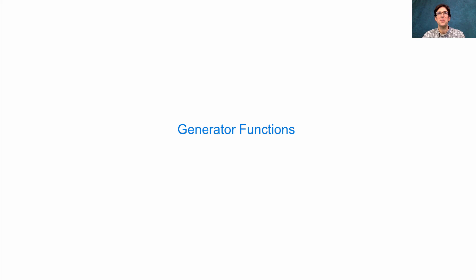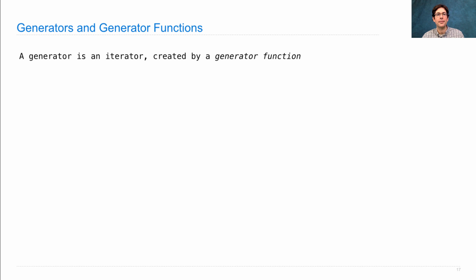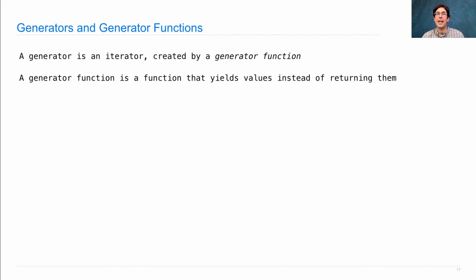Generator functions expose a deep relationship between functions and iterators. A generator function is a special kind of function — instead of returning values, it yields values. A function can normally just return once, but a generator function can yield many times. A generator is an iterator that you get by calling a generator function, and a generator function is any function that, instead of having return statements, has yield statements.